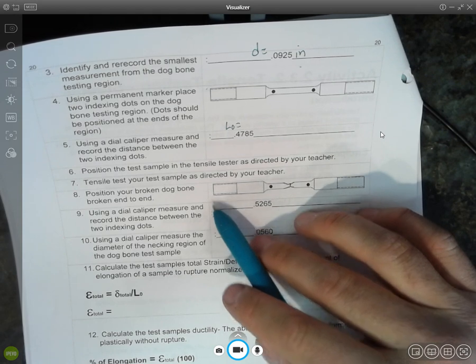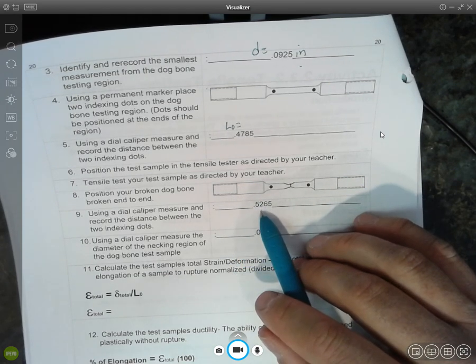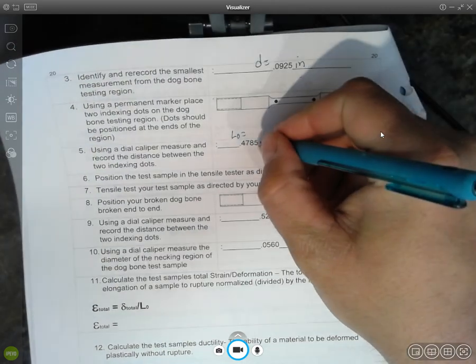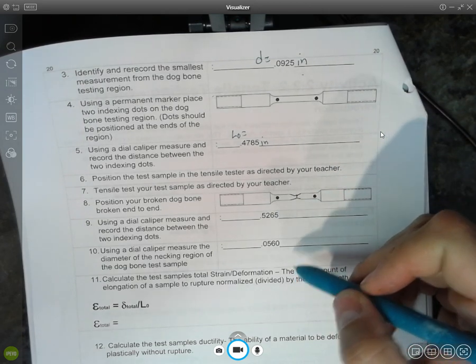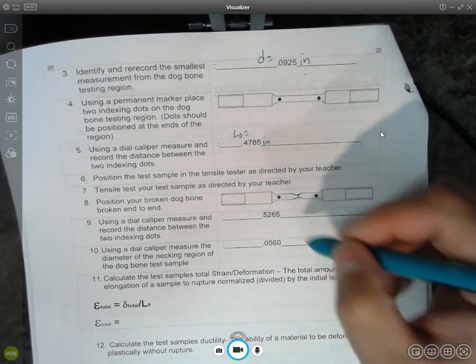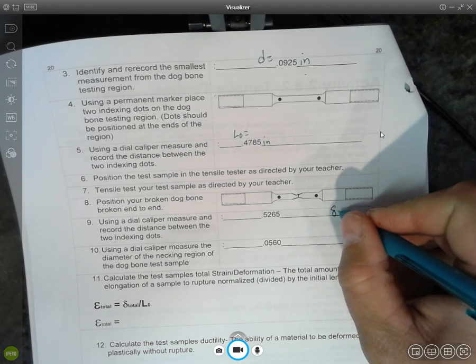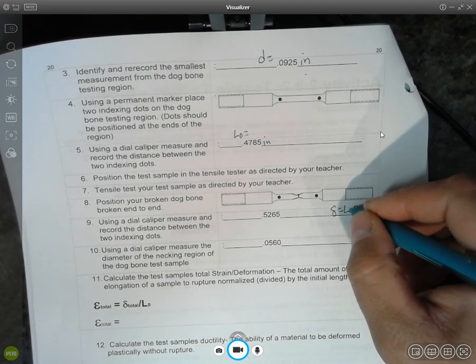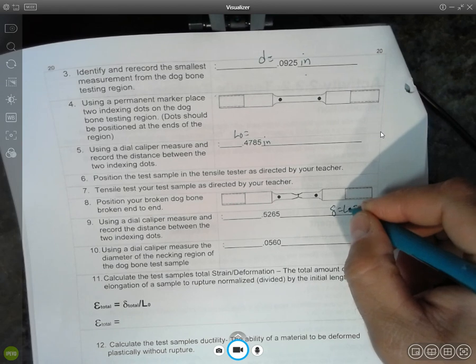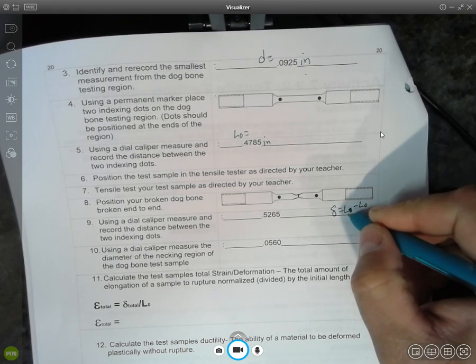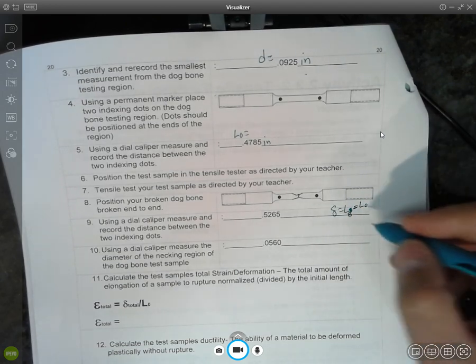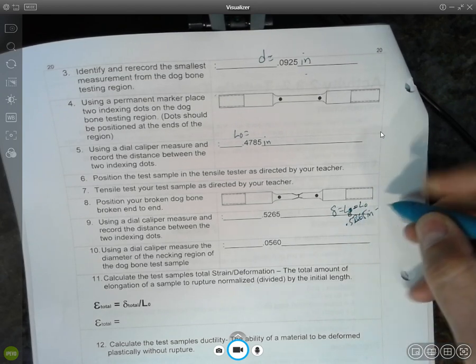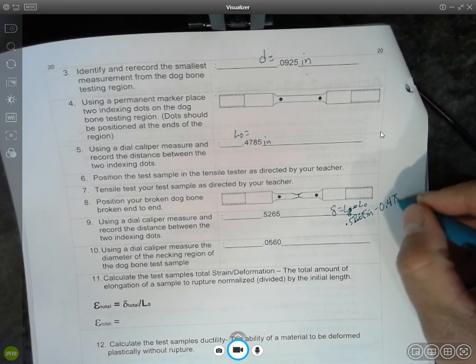So now, after I've pulled it apart, I again measured the distance between the two dots. So you'll notice it was 0.4785 inches, and now it's 0.5265 inches. So you can see that there is some deformation that's occurred. And the deformation is going to be the length after you broke it minus the original length, right? So the broken length minus the original length.